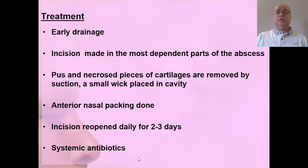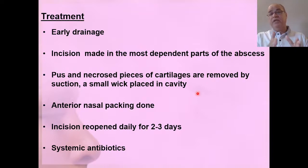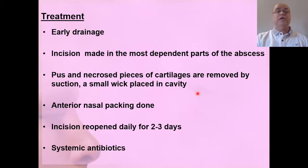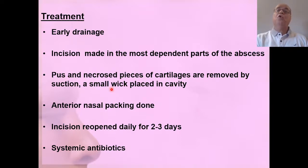Early drainage is required. The incision is made in the most dependent part of the abscess. Pus and necrosed pieces of cartilage are removed by suction, and then a small wick is placed in the cavity. The mucopericondrial flap is raised, necrosed pieces are removed, and a wick is placed in the cavity. Anterior nasal packing is done on both sides to apply pressure. The wick acts as a drain so any further pus formation over the next 24 to 48 hours is drained and not collected.